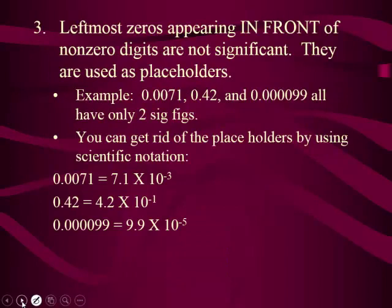Rule number three starts getting a little tricky. It's all about zeros on the left side appearing in front of the number. When are zeros ever in front of the number? There's only one time — when you've got decimals. My nickname for rule number three is the decimal rule. Zeros in the front don't count. That's going to be your chant.